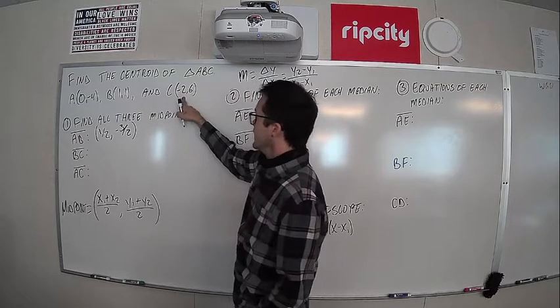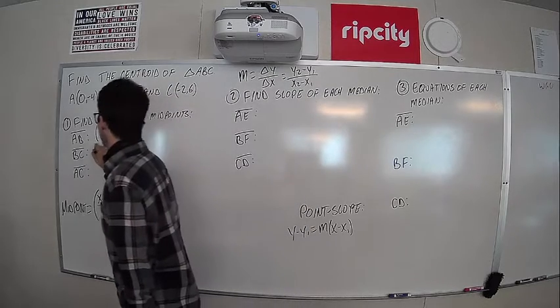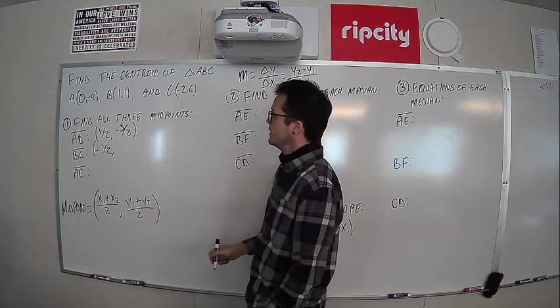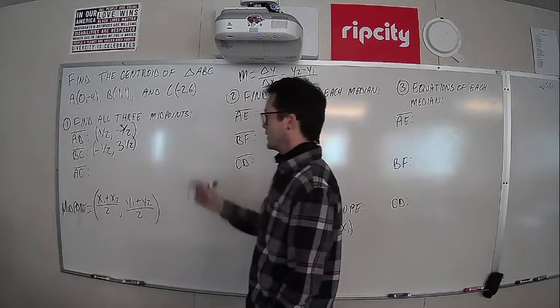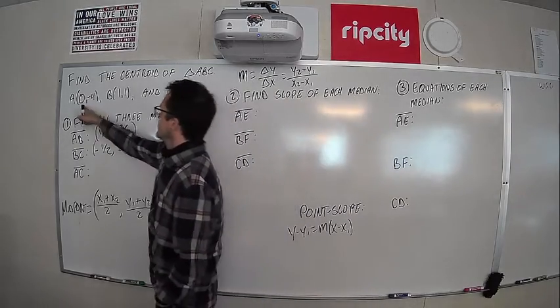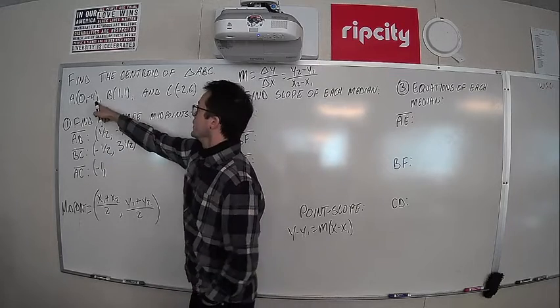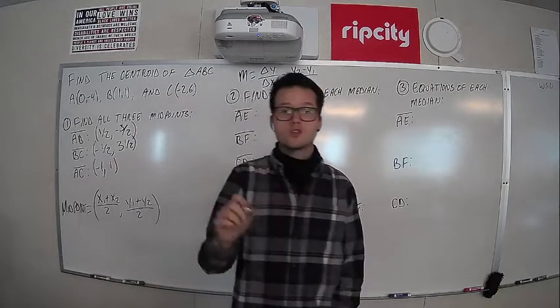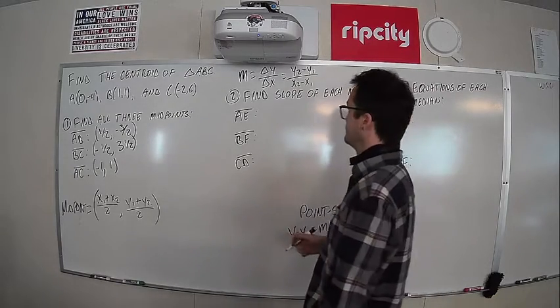B, C. Find the middle x coordinates. 1 minus 2 is negative 1. Half of that is negative 1 half. Now the y coordinate, 1 plus 6 is 7. Half of that is 3 and a half. These are, I know, they're fraction-y. It's kind of annoying, but it'll all work out. A, C. Same thing. 0 plus negative 2. That's negative 2. Half of that is negative 1. And then the y coordinate, negative 4 plus 6 is positive 2. Half of that is positive 1. If you struggle with moving quickly on those, please go review the midpoint formula. There's videos for it and everything in our Google Classroom.